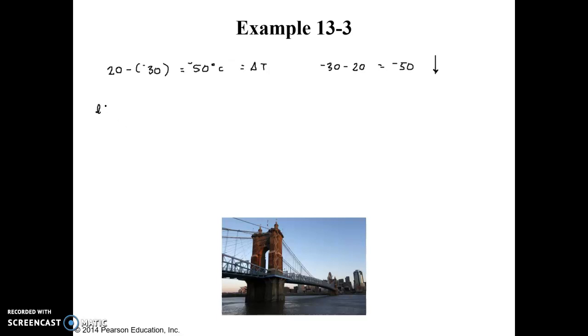So again, length is equal to the original length times 1 plus alpha delta T. And so the original length at 20 degrees Celsius was 200 meters times 1 plus, we've got the same alpha value because it's the same material, steel, 12 times 10 to the negative 6. And this time, we're multiplying by a delta T of negative 50. And when we multiply that out, we should get 199.88. So as you can see, it got a little bit shorter. It got a little bit shorter by 0.12 meters.